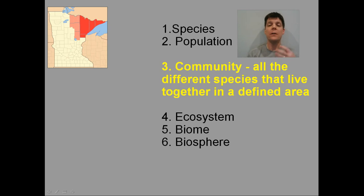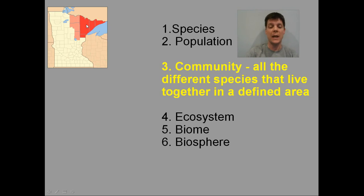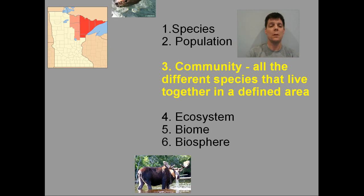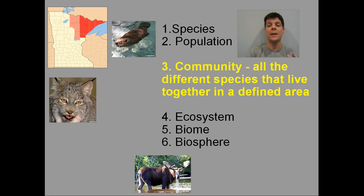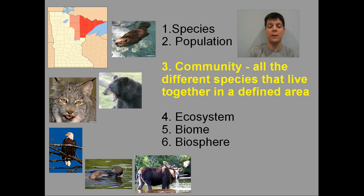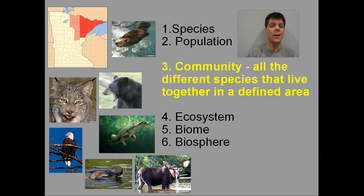The next level of organization is community. Communities refers to all the different species that live together in a defined area. I've selected the Arrowhead region, shaded here in red — the very northeastern part of our state. If we were to visit the Arrowhead, the different types of living things we might find could include moose, beaver, Canada lynx, black bears, bald eagles, loons, and even muskies if you go fishing. All of these different living things present together in an area make up the community of that area.